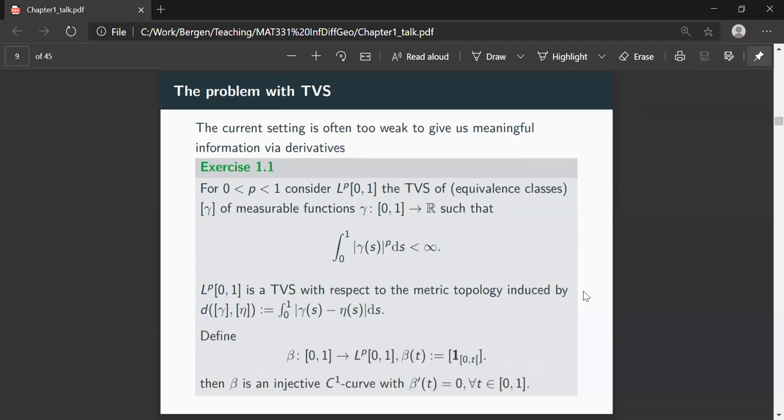And now the problem becomes, we can define a curve beta. We define this as a curve taking time t to the function which is on the interval from zero to t, t excluded, constantly one and outside, so if you evaluate it on something which is strictly larger than t, it's zero. So this is the indicator function of this interval from zero to t. And it's easy to see that this gives you a nice integrable function in this L^p space for p between zero and one. And what you are going to do in one of the exercise sessions later on, you're going to show that this beta is an injective C^1 curve. And in addition, the derivative of the beta vanishes everywhere.